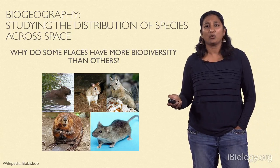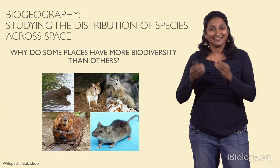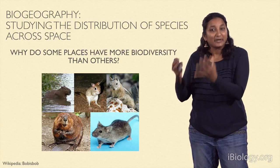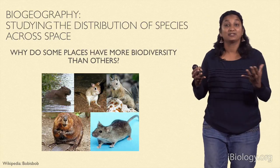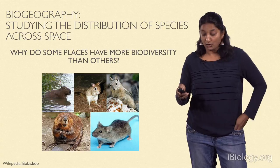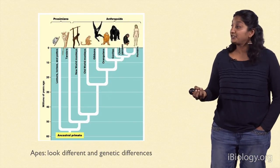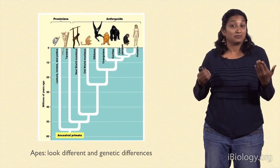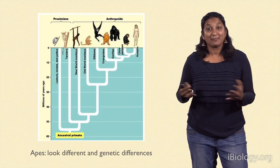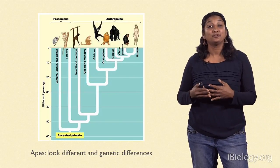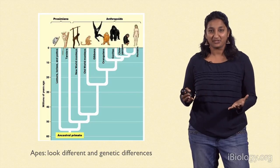So how do we quantify biodiversity? How do we actually use mathematical and statistical ways to study patterns of biodiversity across the world? The first thing we do is we actually count the number of species. This is something which has often been controversial in biology — how do we know what is a species?